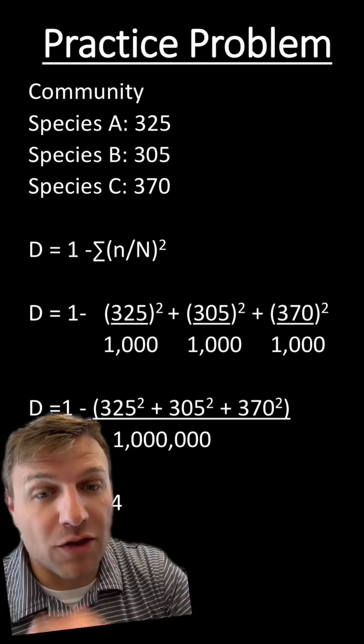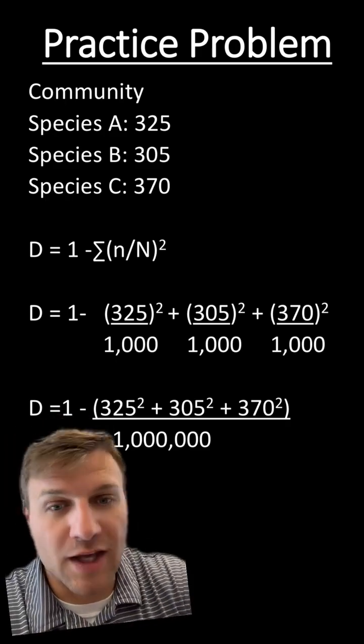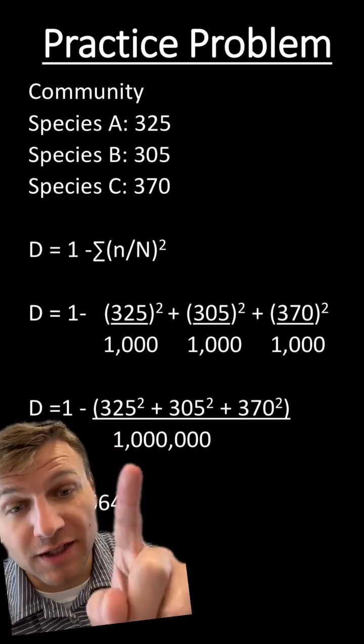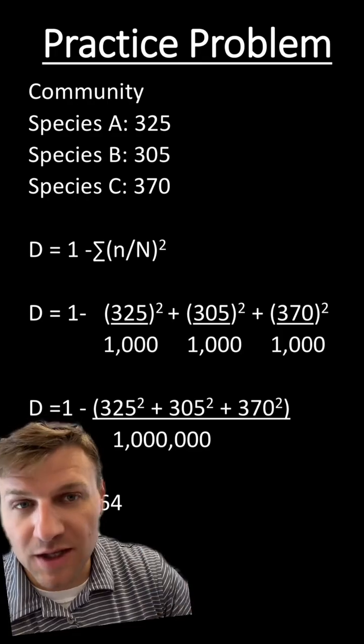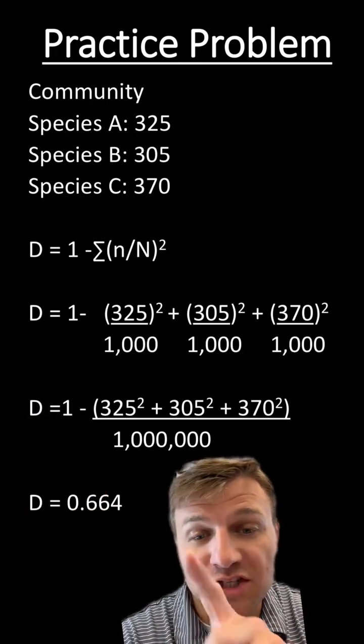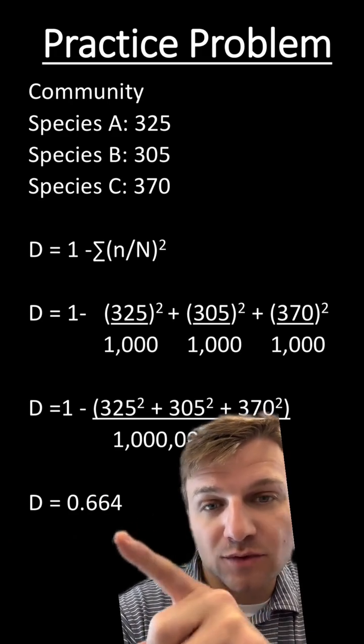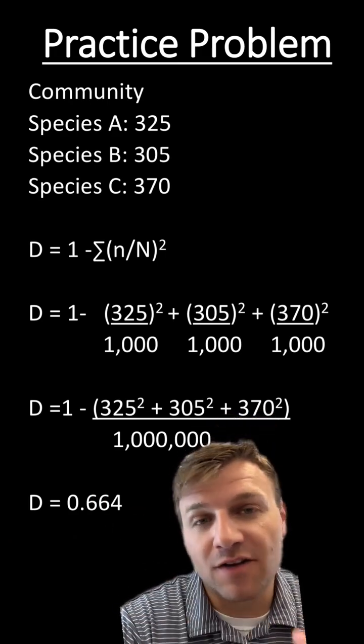We can simplify it by just adding all these numbers together. So it looked like 325 squared plus 305 squared plus 370 squared over 1 million, because 1,000 squared is a million. And when we get that number, we just subtract 1 minus that number, and we get D equals 0.664. So this is our diversity index.